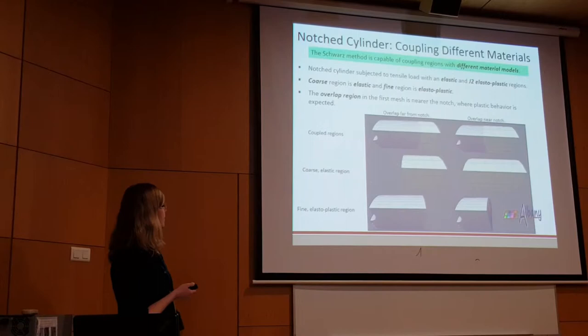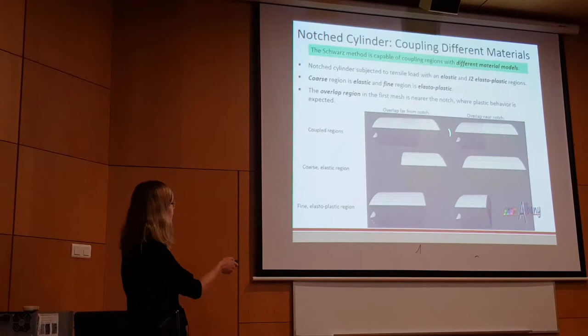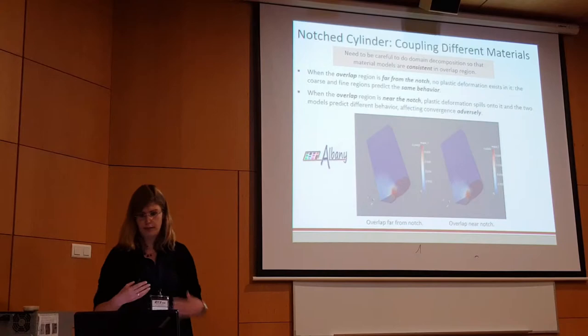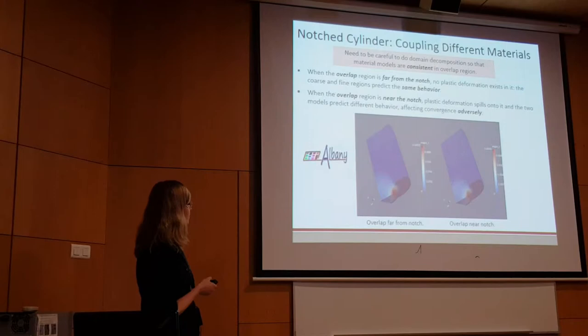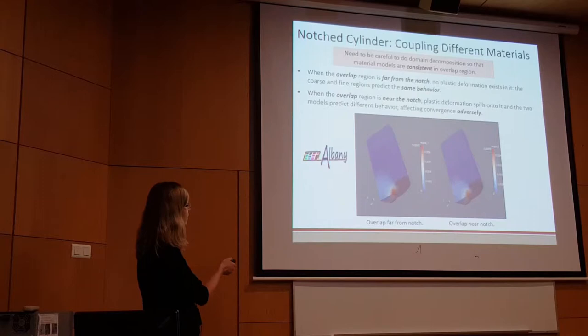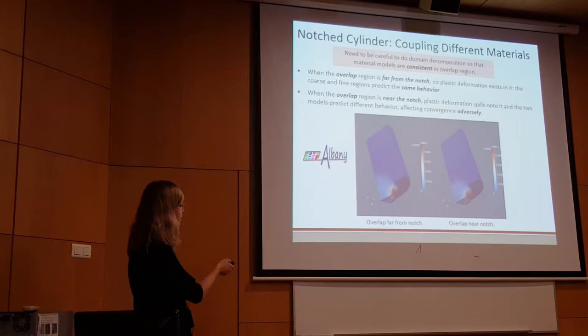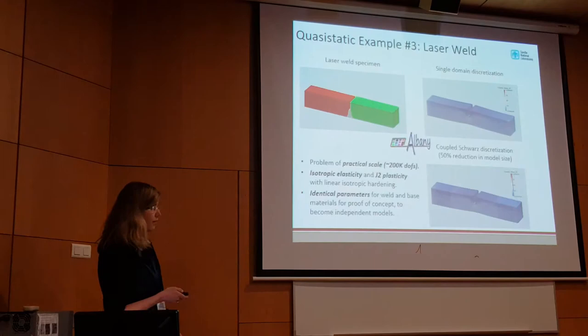We can also couple different material models under some conditions. Here we're trying an elastic material model in the coarse region and an elastoplastic model in the fine region. When using different materials, you need to ensure the models are consistent in the overlap region, since the theory assumes the same material model. This is illustrated with a good and bad domain decomposition: when the overlap is far from the notch, the two models predict the same behavior in that region and you get a nice solution. But if the overlap is too close to the notch, you get adverse effects on convergence and artifacts.